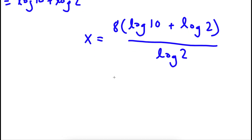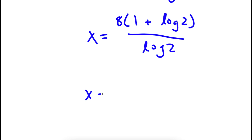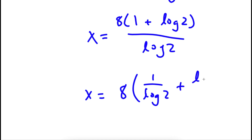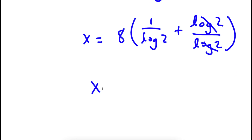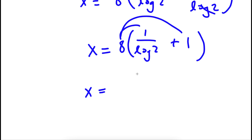Now log 10 is simply equal to 1. So now I have x is equal to 8 times (1 plus log 2) over log 2. This is the same thing as 8 times (1 over log 2 plus log 2 over log 2). And log 2 over log 2 simply cancels out, so I'm left with x is equal to 8 times (1 over log 2 plus 1). If I distribute the 8 to both terms, x is equal to 8 over log 2 plus 8.